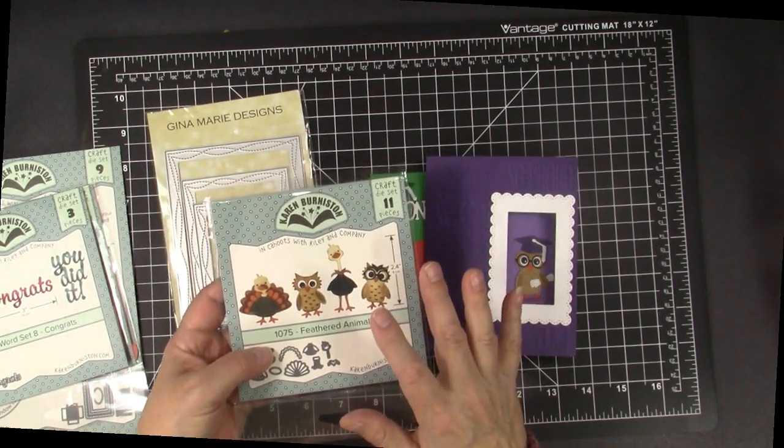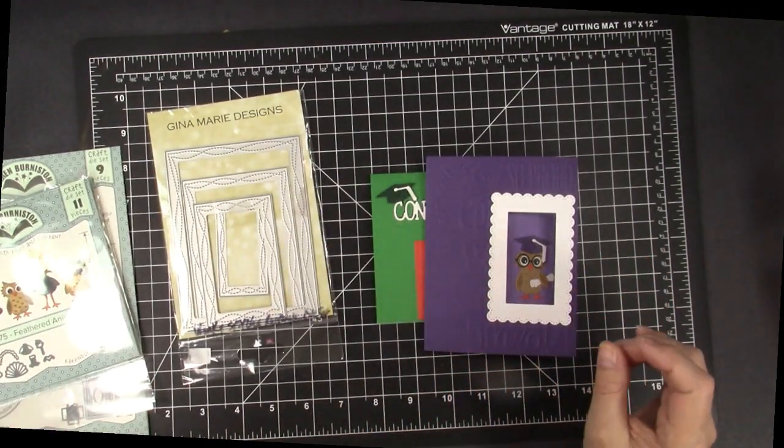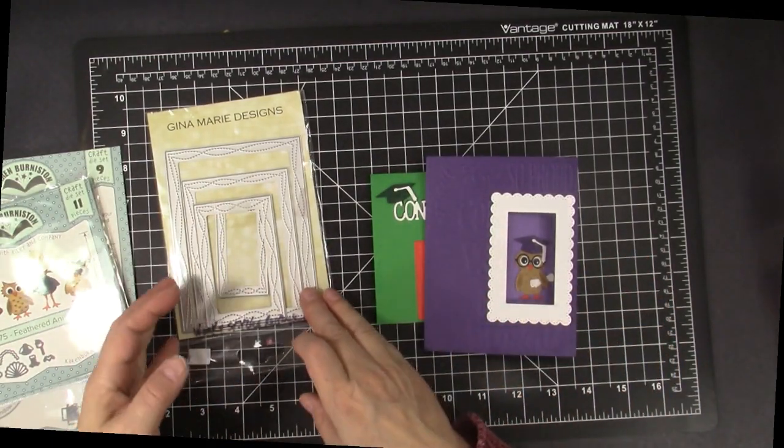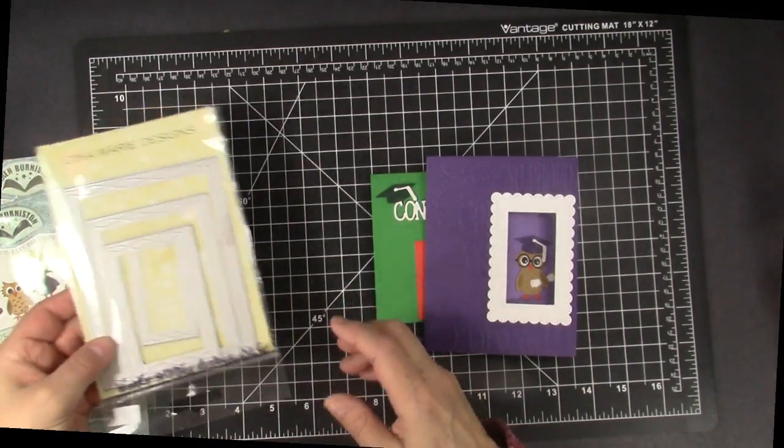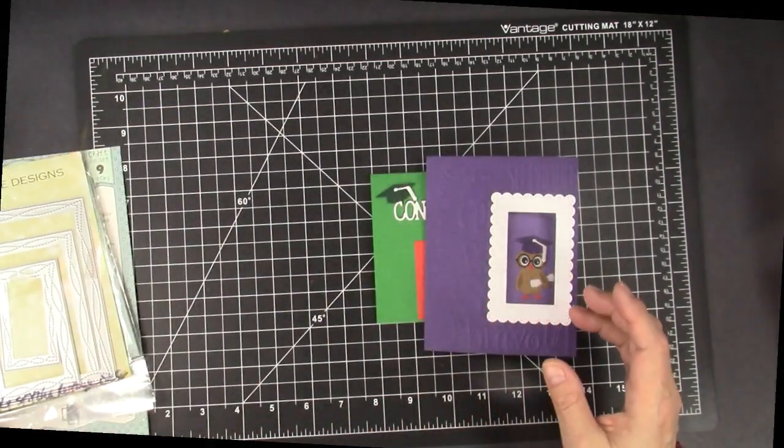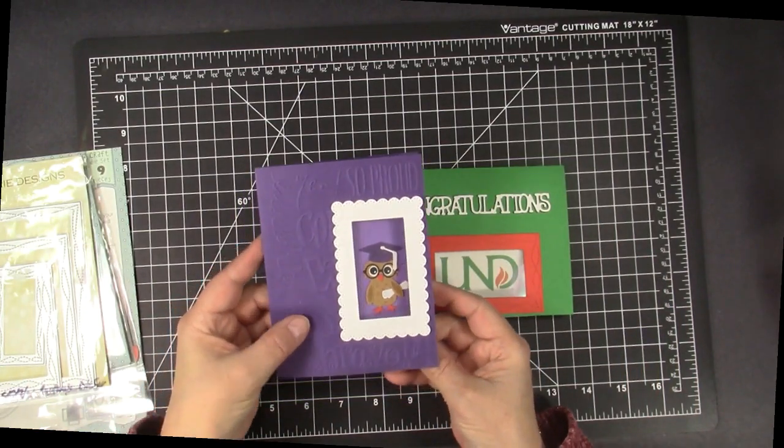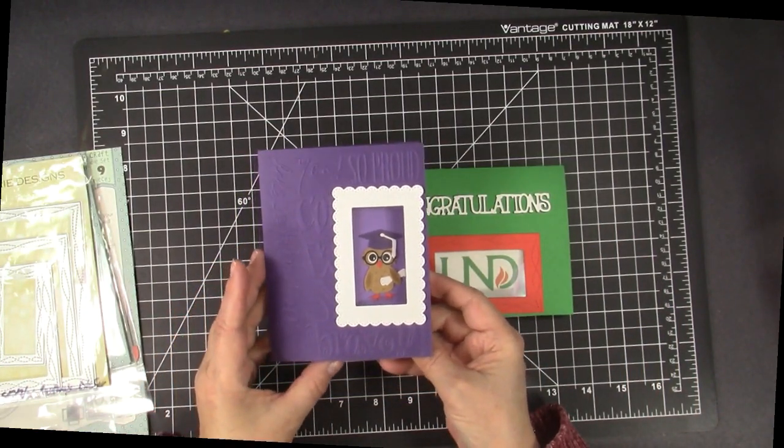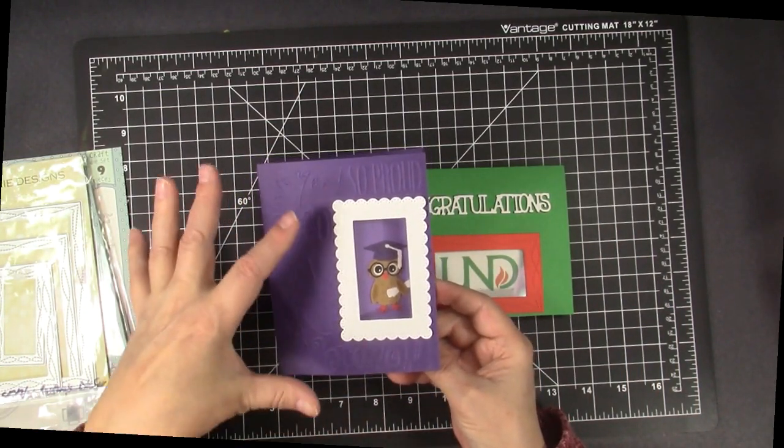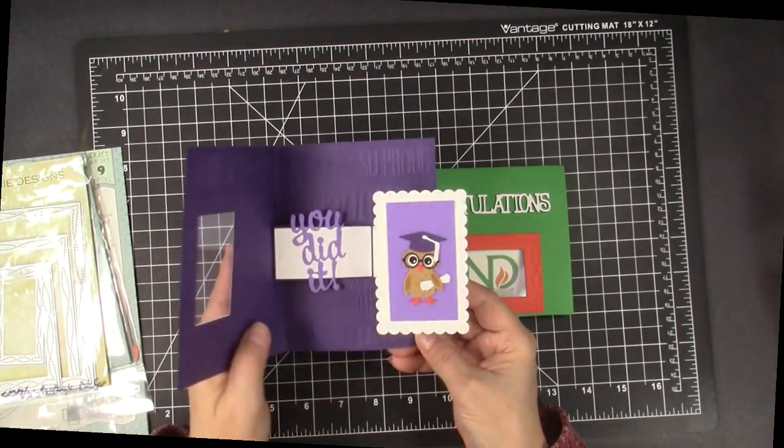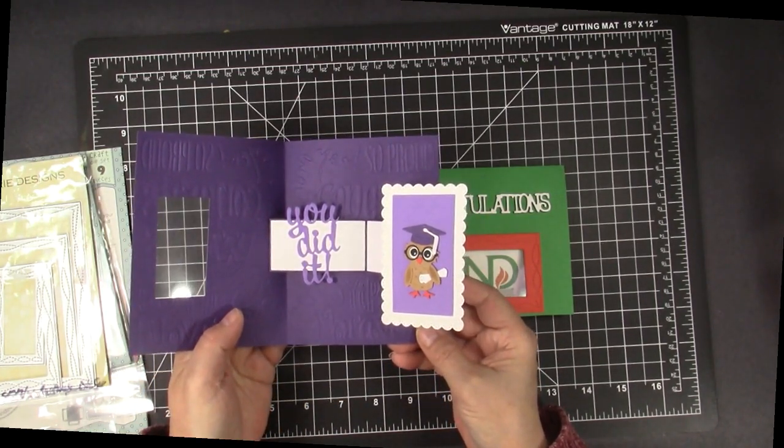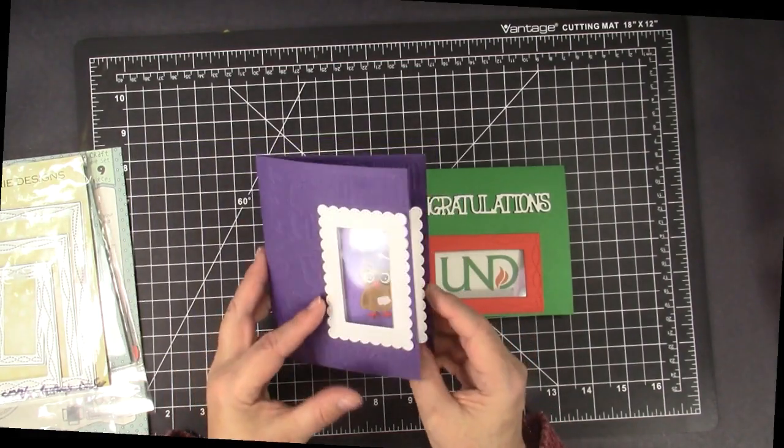And then this is the Cute Feathered Animals Die Set, where I did the Owl. I'll admit I was inspired by a card that Karen did to create this card, and that's the Gina Marie Designs Wonky Rectangles. So again, I'm going to show you how this is made, but I chose to emboss to give it a little more texture, and then when it opens up, the Cute Owl, the Graduate Owl pops up, you did it.